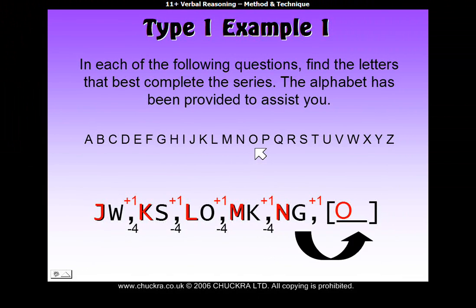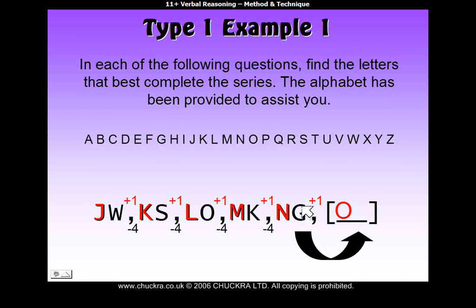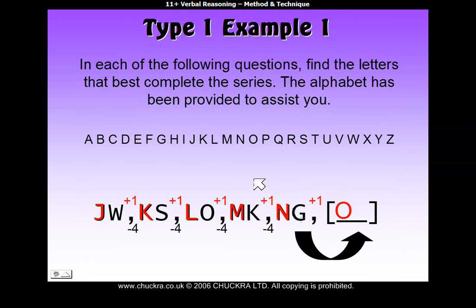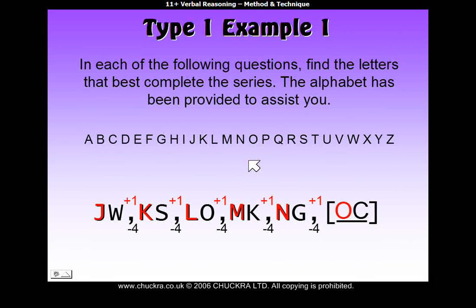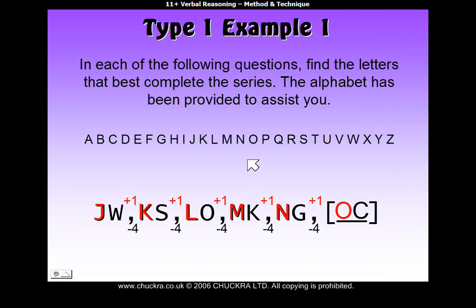So, to find the second letter of our answer, we have to go back four letters from G. So, starting at G, going back one, two, three, four, we get to C. So, our answer to this question is OC.